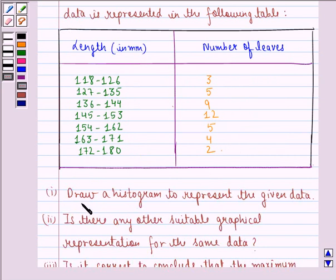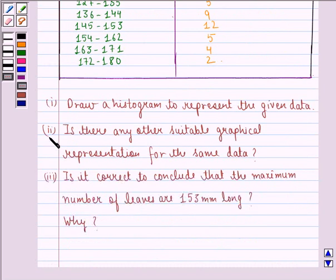First of all we have to draw a histogram to represent the given data. Second question is, is there any other suitable graphical representation for the same data? And third is, is it correct to conclude that the maximum number of leaves are 153 mm long? Why?